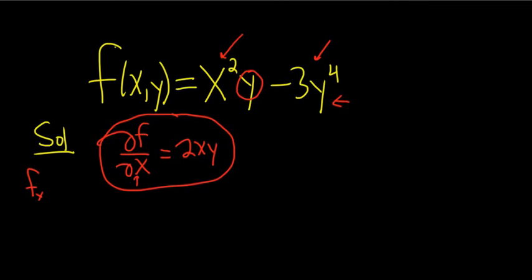Now let's find the partial with respect to y, ∂f/∂y. When we take this derivative, the derivative of y is 1, and we treat the x's as constants. So that x squared hangs out. We just get x squared times 1, or just x squared, because the derivative of y is 1.